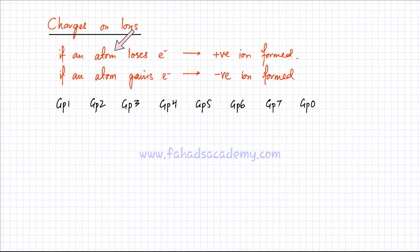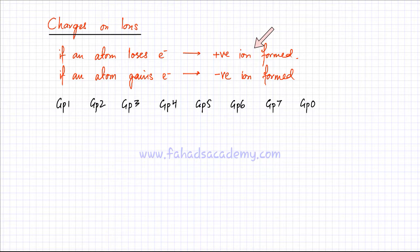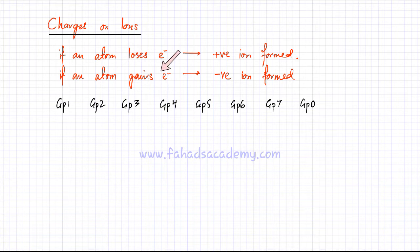If an atom loses electrons, it forms a positive ion. If it loses one electron, it will have a net positive charge of plus one. If it loses two electrons, it will have a net positive charge of plus two and so on. Similarly, if an atom gains electrons, negative ions are formed because now it has more electrons — it has more negative charge.